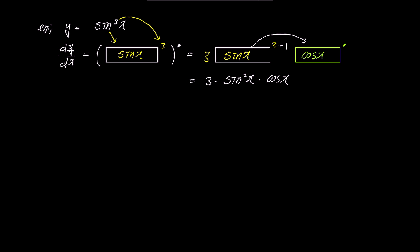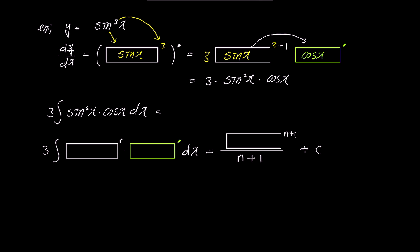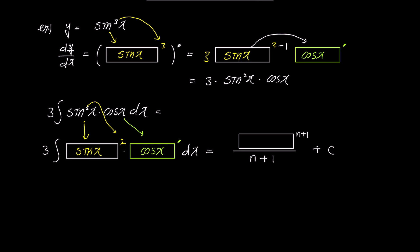Now let's integrate this expression. We pull the constant 3 out and find 3 times the integral of sin²x times cos x dx. Using the box rule, we multiply the formula by 3, insert sin x into the box, set n to 2, and for box prime we use cos x. On the right side, we also multiply by 3, insert sin x, and set n to 2. So 3 sin³x / 3 + c simplifies to sin³x + c.